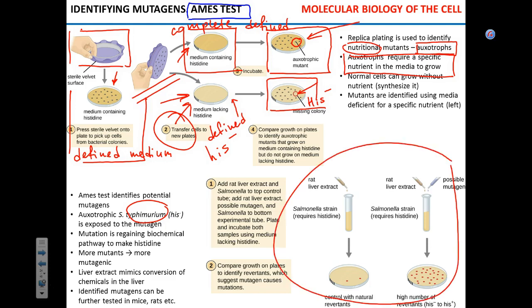In this experiment, we're going to expose our mutant to a potential mutagen — this blue liquid, whatever it is. Let's assume it indeed has strong mutagenic properties. If it is a strong mutagen, what is it going to introduce into the DNA of our Salmonella? Very simply — the mutagen is going to introduce mutations, and those mutations are going to be random, like shooting at a wall blindfolded.